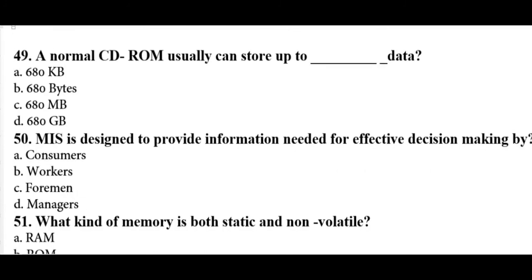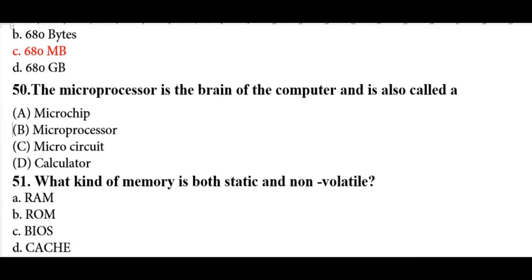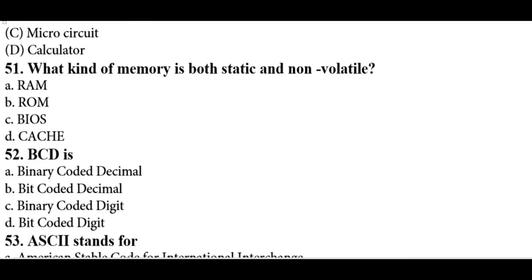A normal CD-ROM can store up to 680 MB — we discussed this when comparing DVD, CD, and Blu-ray capacities. The microprocessor is the brain of the computer and is also called a microchip. The microprocessor itself is the brain of the computer.